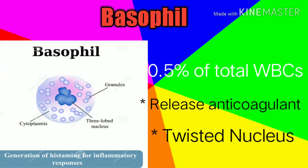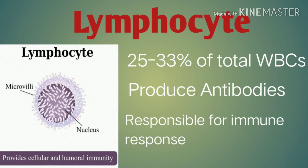Basophils consist of 0.5 percent of total WBCs, making them the least common type. They release anti-coagulants, have a twisted nucleus, and help in the generation of histamine for inflammatory responses. The number of basophils increases during inflammation.